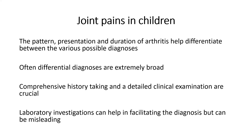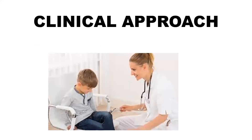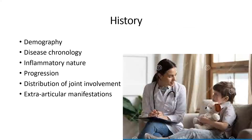When taking a history from a child with joint pains, ask about demographic factors: whether the child is a girl or boy, the age, where they live, and how the disease has evolved over time — whether it involves a single joint or multiple joints, whether there is fever, systemic symptoms, a migratory pattern, or intermittent involvement. Knowing the disease chronology is very important.